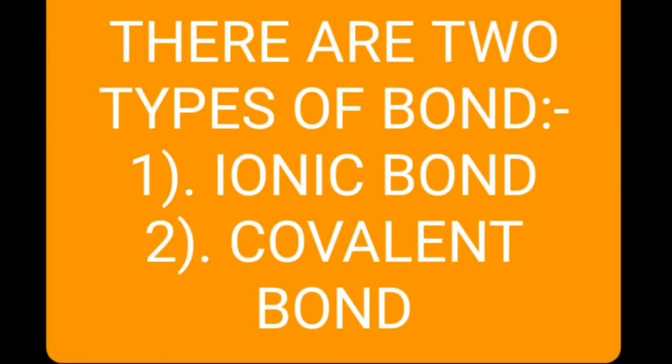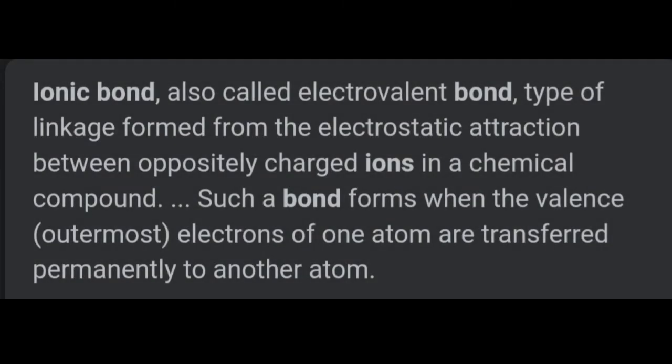Types of chemical bonds: there are two types of chemical bonds - ionic bond and covalent bond. The chemical bond formed by the transfer of an electron from one atom to another is known as an ionic bond.